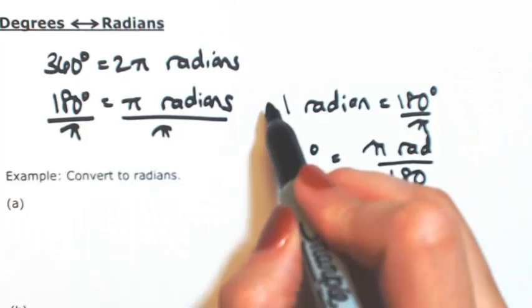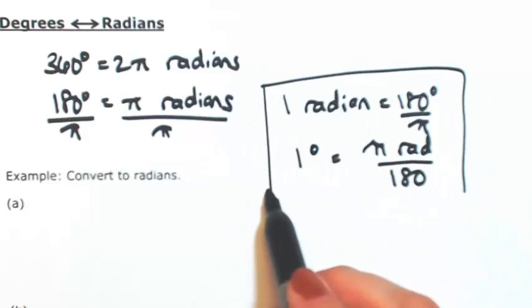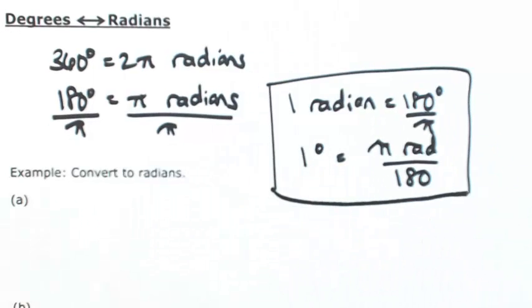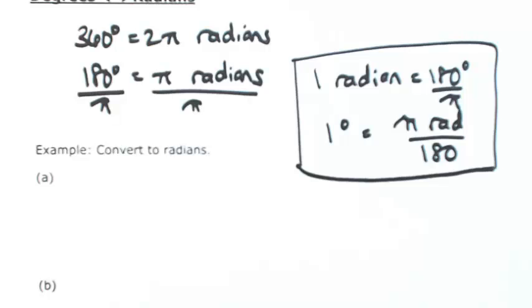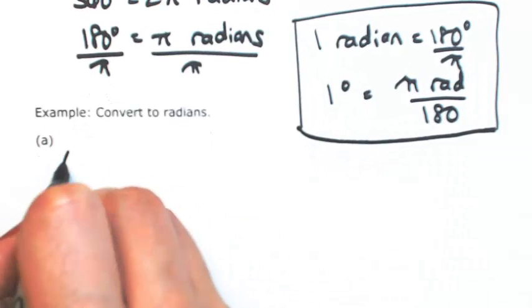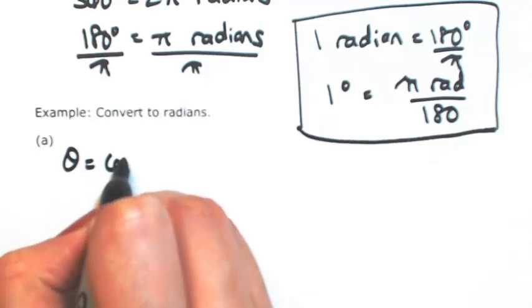So using these two conversions, let's convert back and forth. For example, let me give you something with degrees. Let's say that theta is 60 degrees.